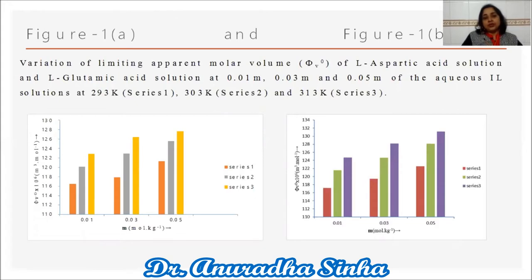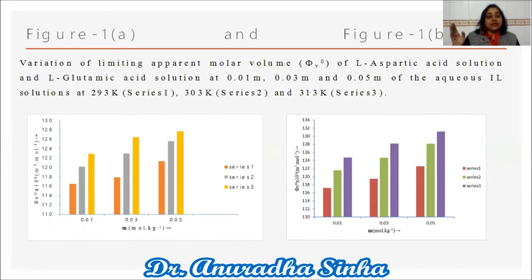Figures 1a and 1b show the variation of the limiting apparent molar volume φ_V⁰ for L-aspartic acid and L-glutamic acid at 0.01 M, 0.03 M, and 0.05 M ionic liquid concentrations at 293 K (series 1), 303 K (series 2), and 313 K (series 3). The φ_V⁰ values are positive and increase with increasing ionic liquid concentration and temperature, indicating the extent of solute-solvent interactions. The maximum is found for L-glutamic acid in 0.05 M ionic liquid at 313 K, and the minimum for L-aspartic acid in 0.01 M ionic liquid at 293 K, likely due to release of solute molecules from loose solvation layers during solute-solute interactions.